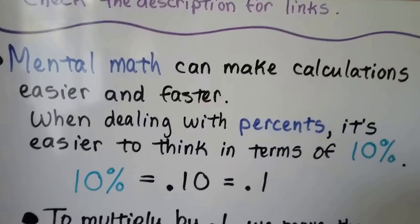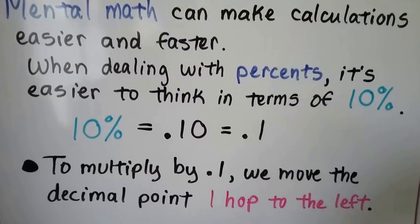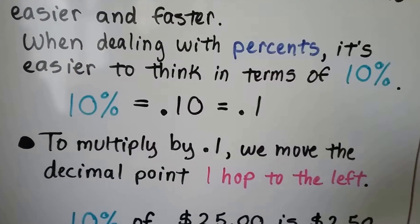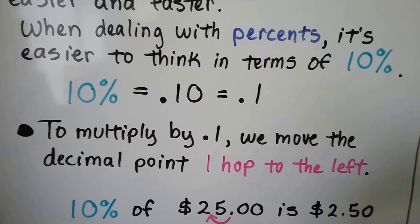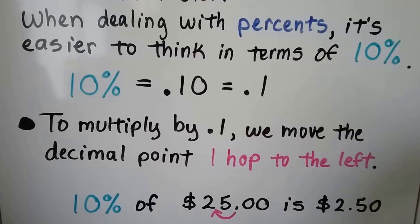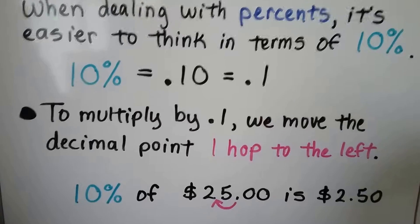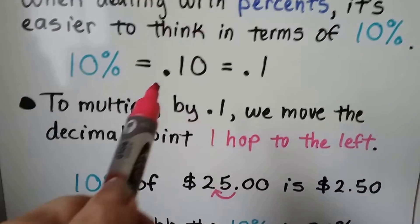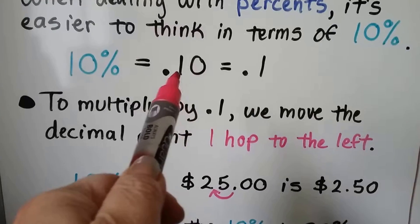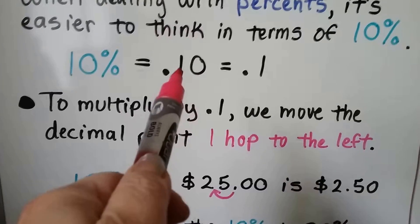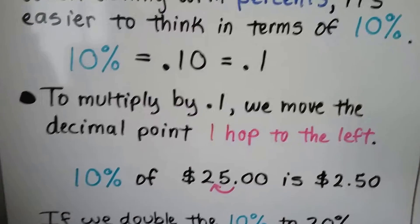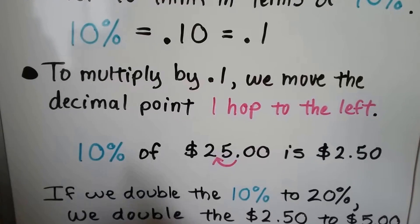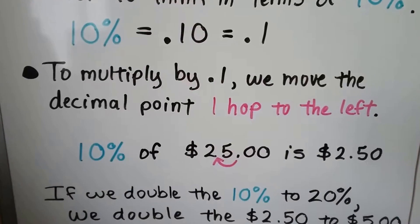Mental math can make calculations easier and faster when dealing with percents. It's easier to think in terms of ten percent. Ten percent equals 0.10 or ten hundredths, which is 0.1 or one tenth. They're all the same thing, they're equivalent. We don't need that zero to the right of the last decimal value.